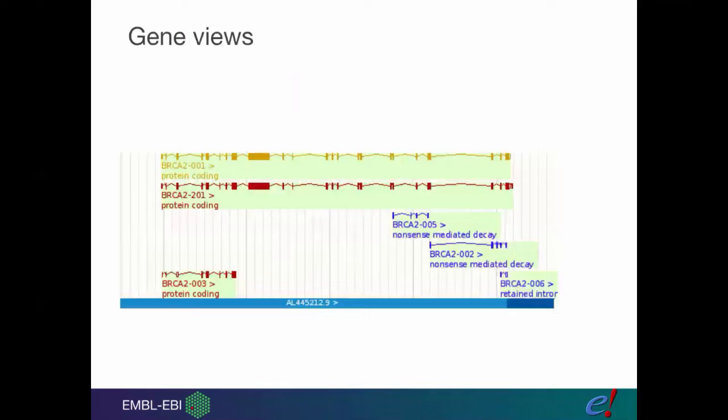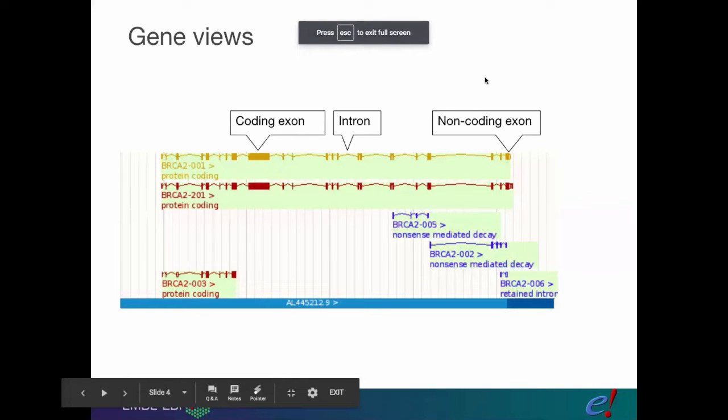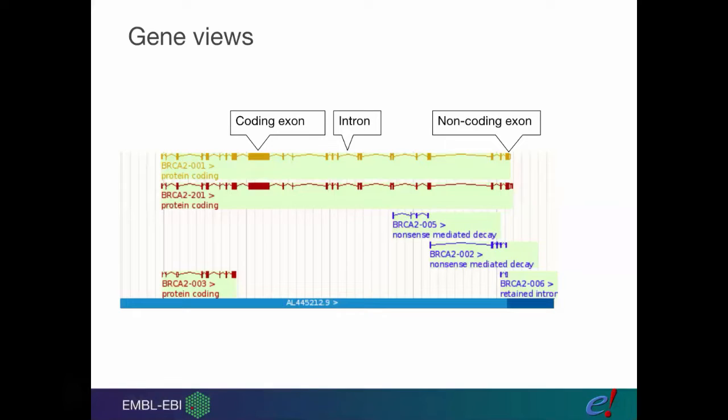You should have already seen in the region views that this is what genes look like in Ensembl. There's lots of things we can tell about these genes just from the visualization. The first is the structure of the exons and introns. Exons are shown as boxes and introns are shown as lines connecting them together.